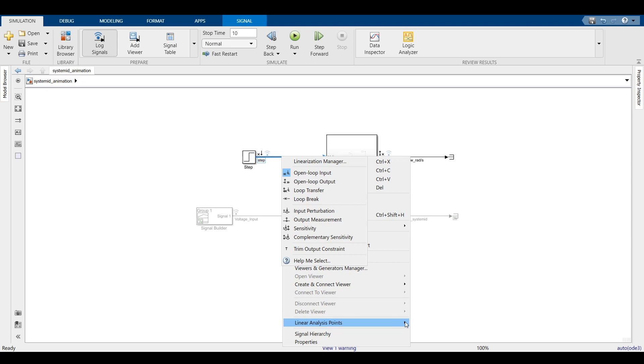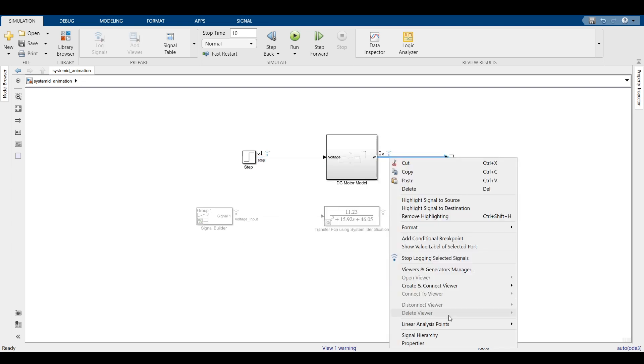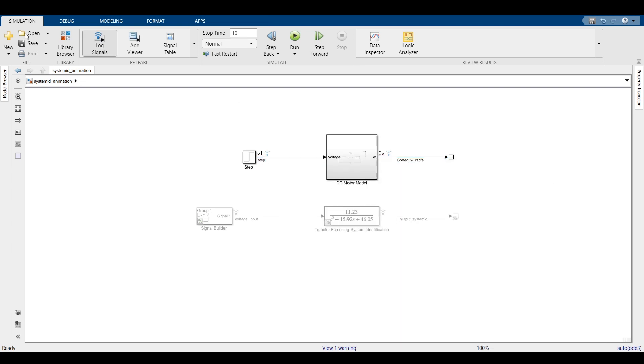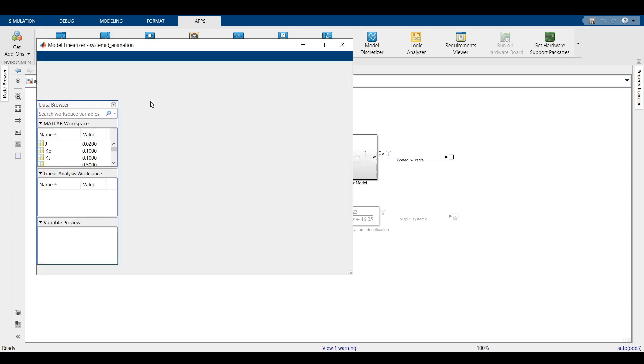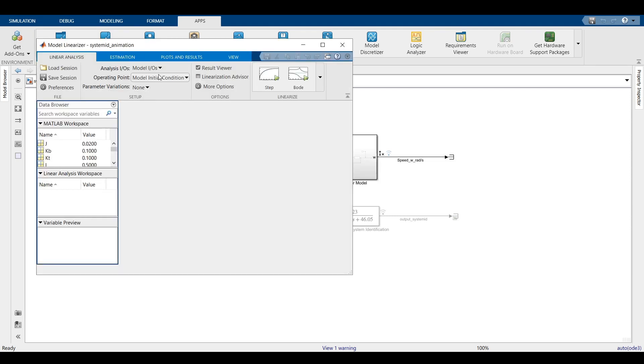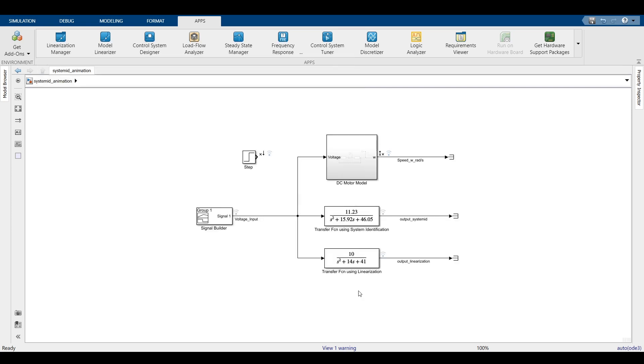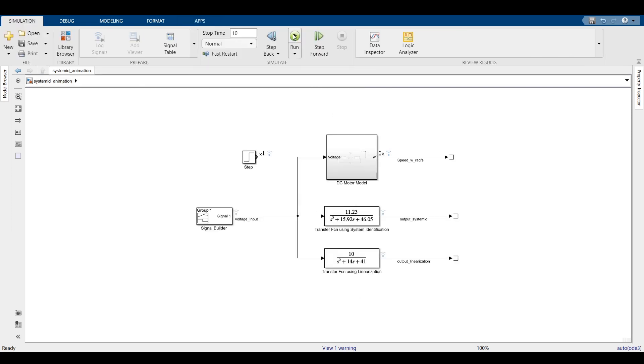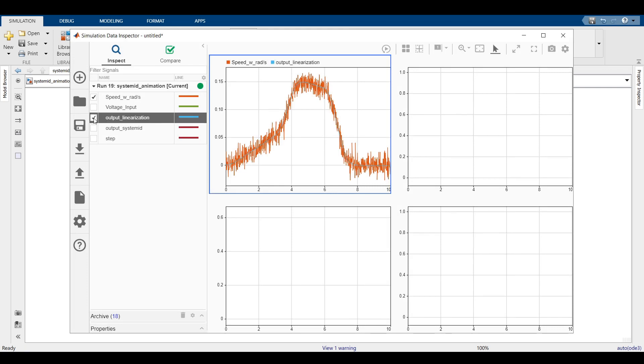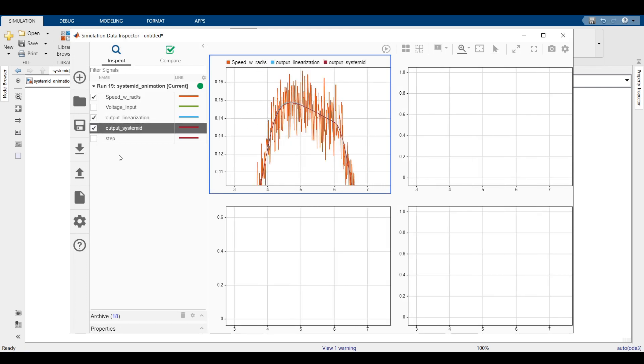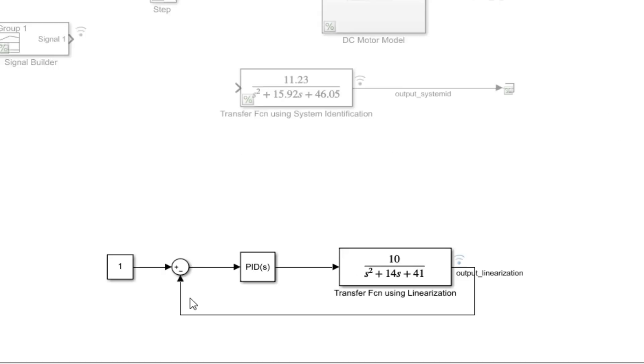Here, we will mark the input and outputs as point of linearization. Then, we will go to the model linearizer app and then we will select the operating point. We will select the step input and there we have the linearize transfer function. It is as easy as what you saw. Let us put this transfer function into Simulink and see how it compares to the model we developed using first principles and using system identification. Pretty good I would say.